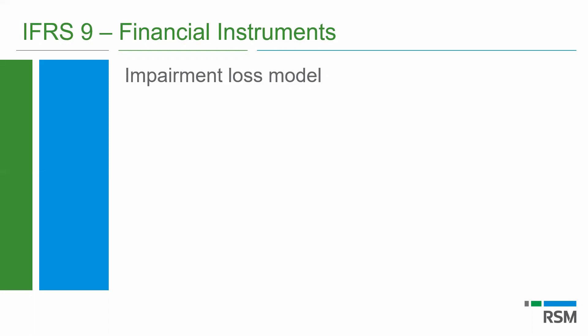This is quite a significant change. The whole thinking around impairment of financial assets has changed. I'm going to be focusing largely on the impairments of trade receivables because that is what affects 99% of our clients. If there are any other instruments you might have, we could deal with that separately, but this presentation in the remaining time is going to deal with the impairment testing on trade receivables.